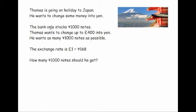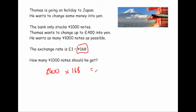This one's a bit more complicated. Thomas goes on holiday to Japan and wants to change money into yen. The bank only stocks 1,000-yen notes. Thomas wants to change up to 400 pounds into yen and get as many 1,000-yen notes as possible. The exchange rate is one pound equals 168 yen. We multiply 400 by 168, which gives us 67,200 yen.